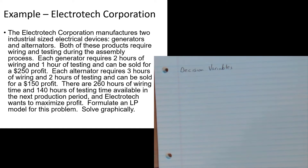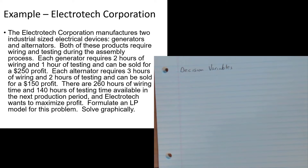Each generator requires two hours of wiring and one hour of testing, and can be sold for a $250 profit - giving me a sense that I want to maximize that profit. Each alternator requires three hours of wiring and two hours of testing and can be sold for $150 profit. There are 260 hours of wiring time and 140 hours of testing time available - that sounds like a capacity constraint. Electrotech wants to maximize profit, so the objective function is now solid.